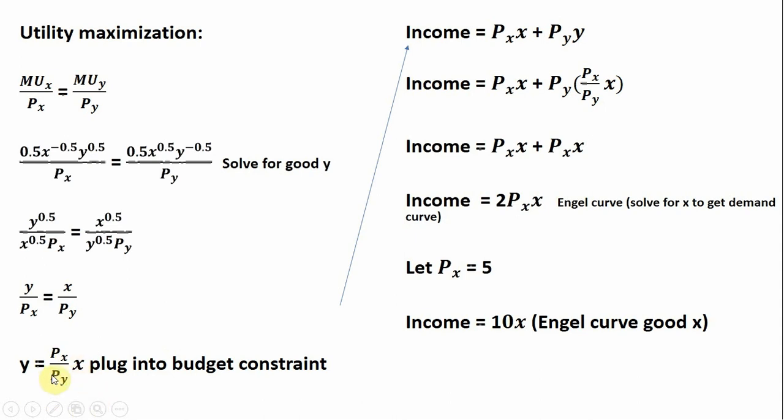We take this expression and plug it into the consumer's budget constraint, where income equals the price of good X times units of good X plus the price of good Y times units of good Y. Where we see the Y term for units of good Y, we plug in this expression shown in parentheses. Simplifying, the price of good Y divided by the price of good Y becomes 1 and cancels.